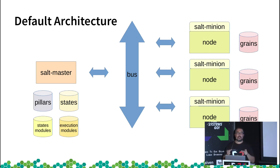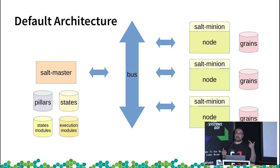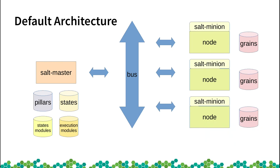We have pillars — the data that states use for proper configuration. For example, a state ensures Apache is installed, but Apache has different package names across distributions. Via a pillar you can provide all those names. So on one side you have the state guaranteeing a certain configuration, and on the other the pillar providing the data. Between them is a bus — the communication channel between minions and master — which can also deliver events. If a node does something, the master captures the event and acts accordingly.